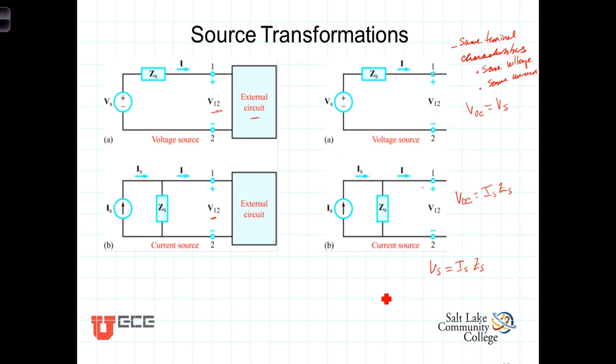And simply rearranging it, we can come up with an expression for I sub S in terms of V sub S. That would be I sub S equals V sub S over Z sub S. So if we had a series voltage source and impedance, we could replace those with a parallel current source and impedance if I sub S here was equal to the quantity V sub S divided by Z sub S.